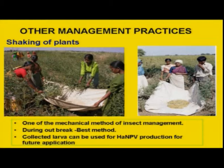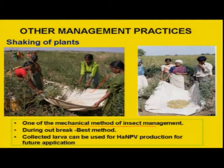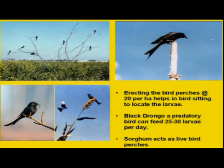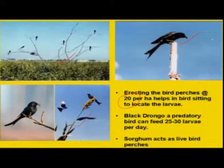In addition, some mechanical methods need to be incorporated. If labor is available, shaking the plant is useful — at that stage, seed setting is over and pod development is taking place, so fully grown larvae can be collected in plastic or cloth. These larvae can also be used for mass production of NPV in the laboratory. Erecting deadwood branches or live sorghum branches, about 20 per hectare, serves as perches for the black drongo, which is an excellent predator that can catch Helicoverpa larvae within about a one-meter radius.